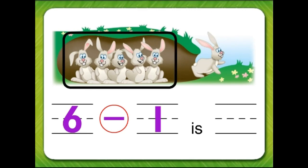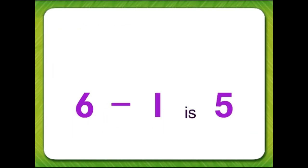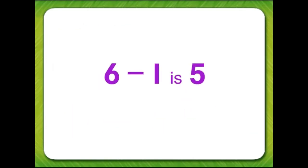How many rabbits are left in the rabbit hole? One, two, three, four, five. So, six minus one is five.